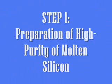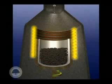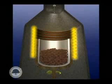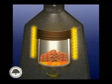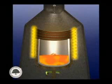Step 1: Preparation of High Purity Molten Silicon. In the Czochralski process, high purity silicon is used as the molten source to form single crystal silicon. Silicon dioxide can be used to prepare high purity molten silicon, which is then heated to its melting point in a quartz crucible. This supersaturated molten solution becomes the source for the silicon wafer.